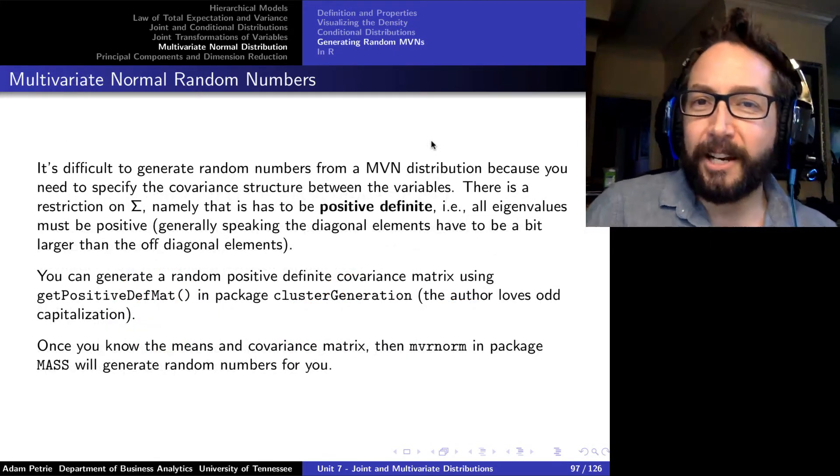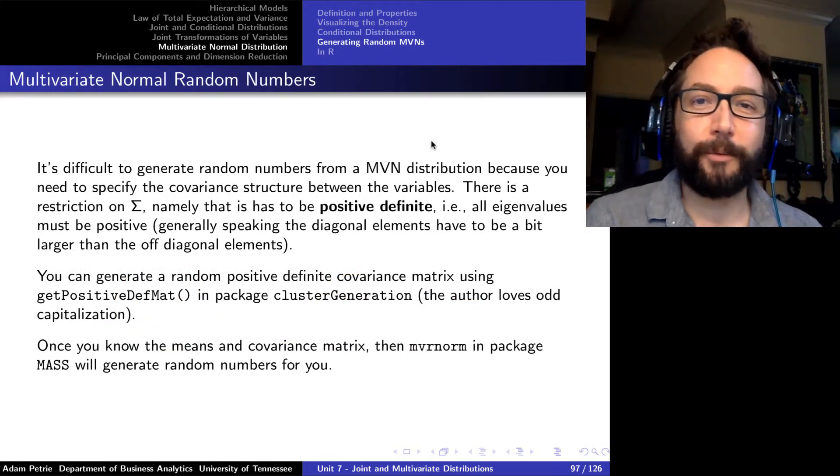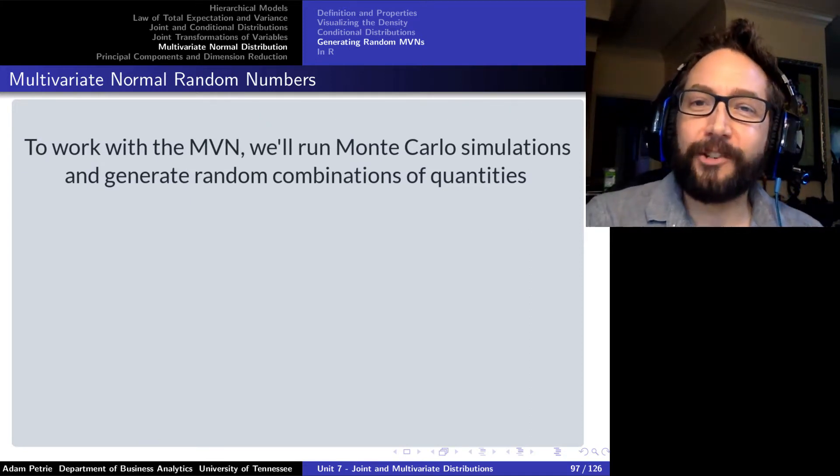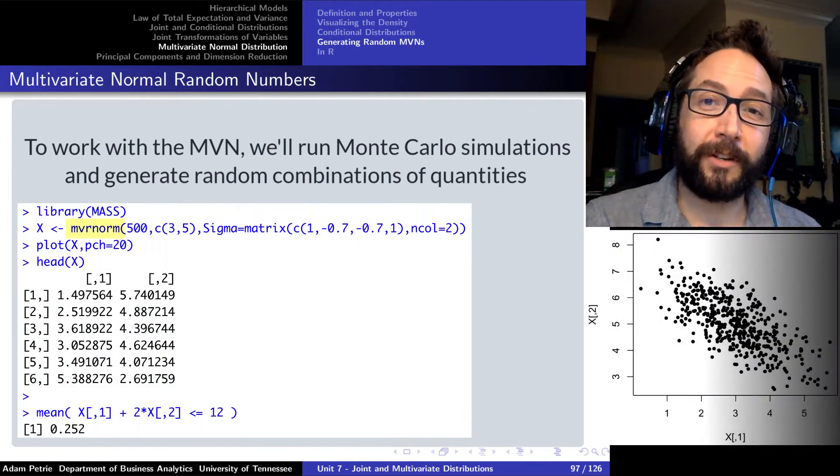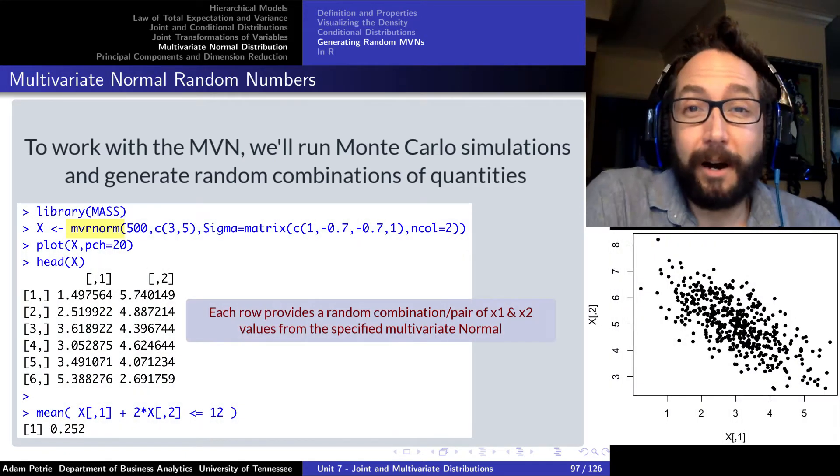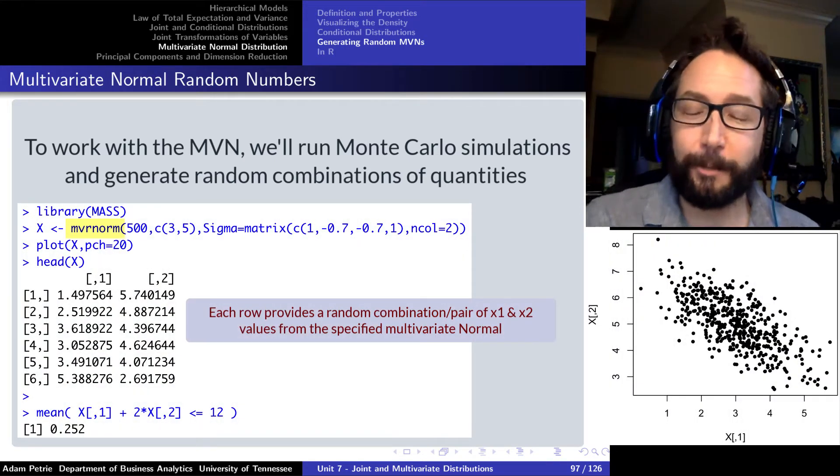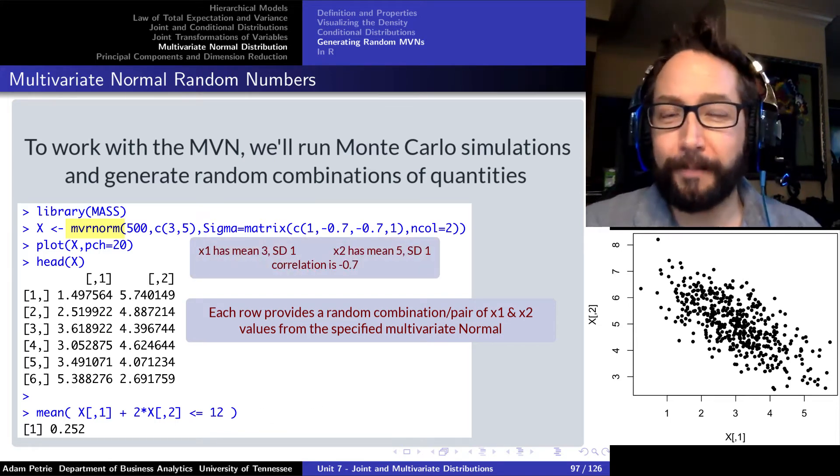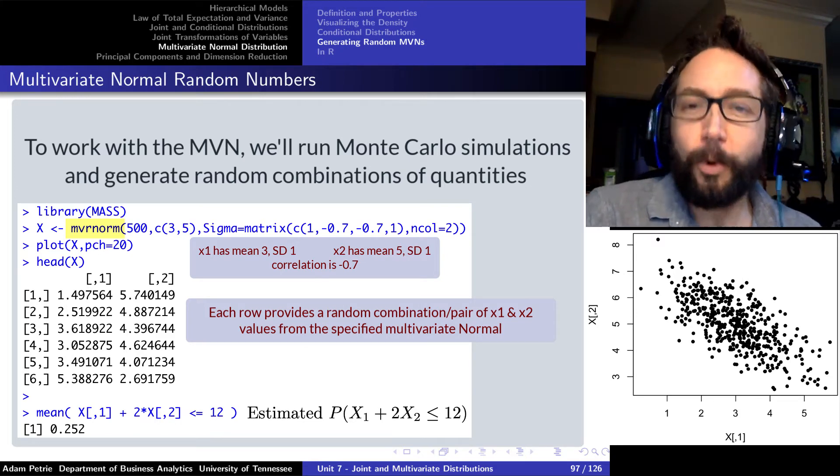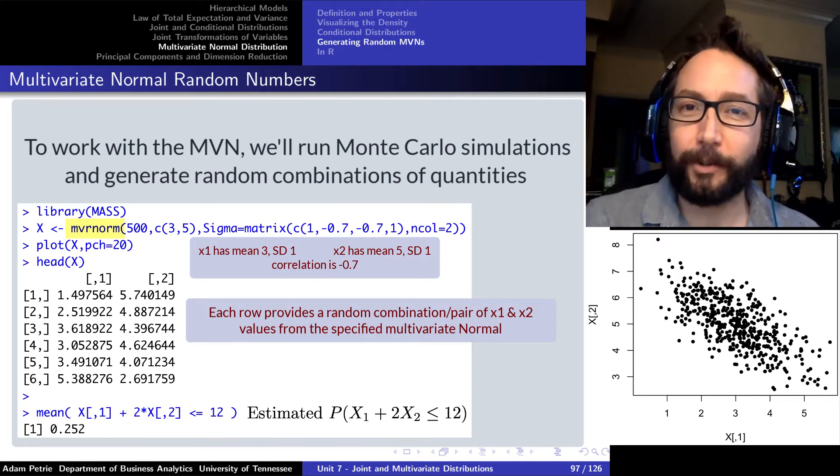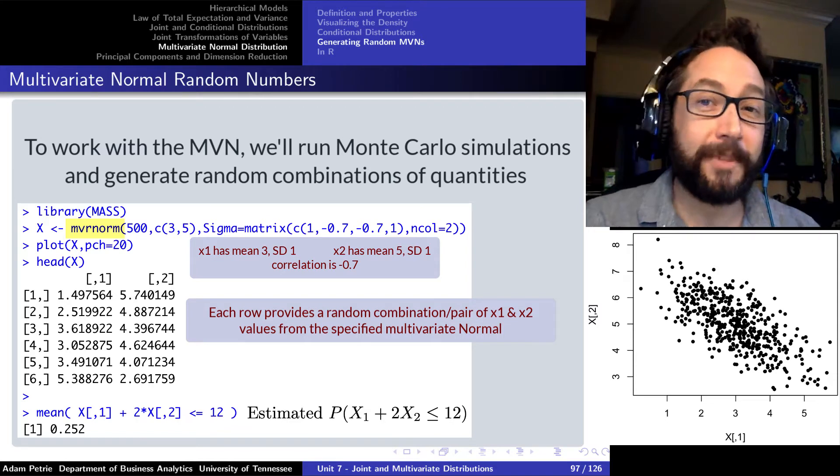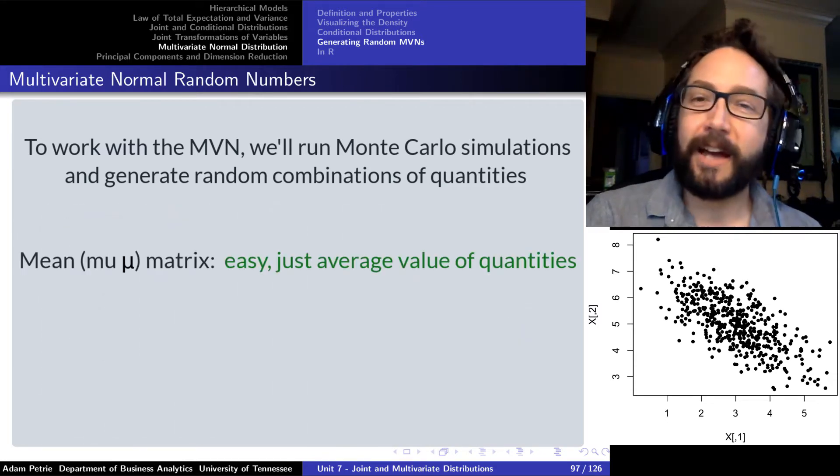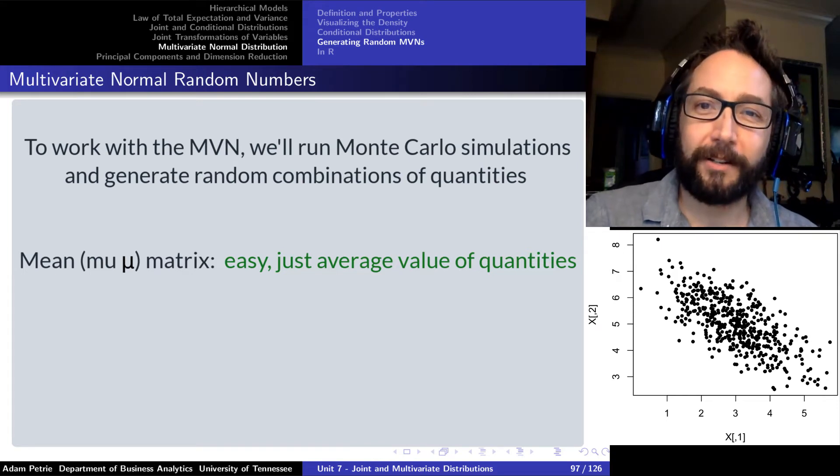Now, instead of actually working with any of the math with a multivariate normal distribution, which I think is pretty tricky, I think it's much more advantageous to run a Monte Carlo simulation that actually generates random combinations of quantities involved in your multivariate normal, and then ask questions about the probabilities from the Monte Carlo simulation. So the most important thing from studying a multivariate normal is how do we get random numbers with a particular design, a particular mean vector, and a particular covariance matrix?